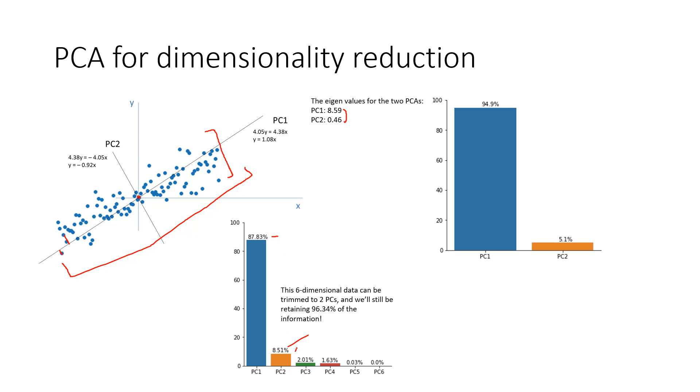Even if we neglect all of these other four principal components, and work only with the first two, we will be having 96.34% of the information with us. Effectively, we have cut down our dataset from six features to two features, without losing much information.